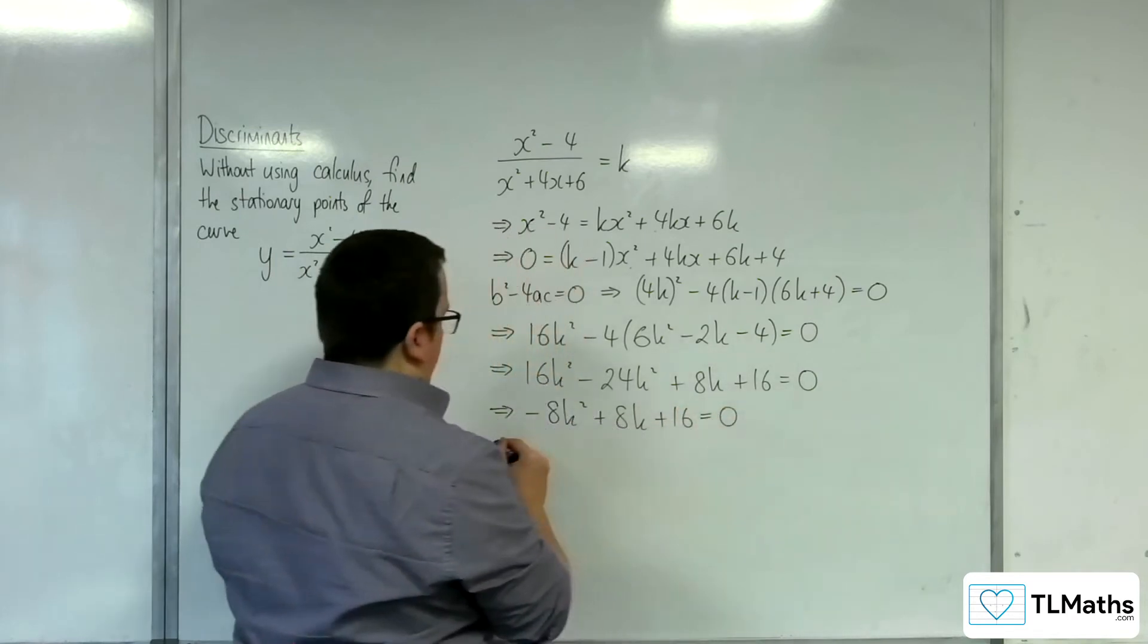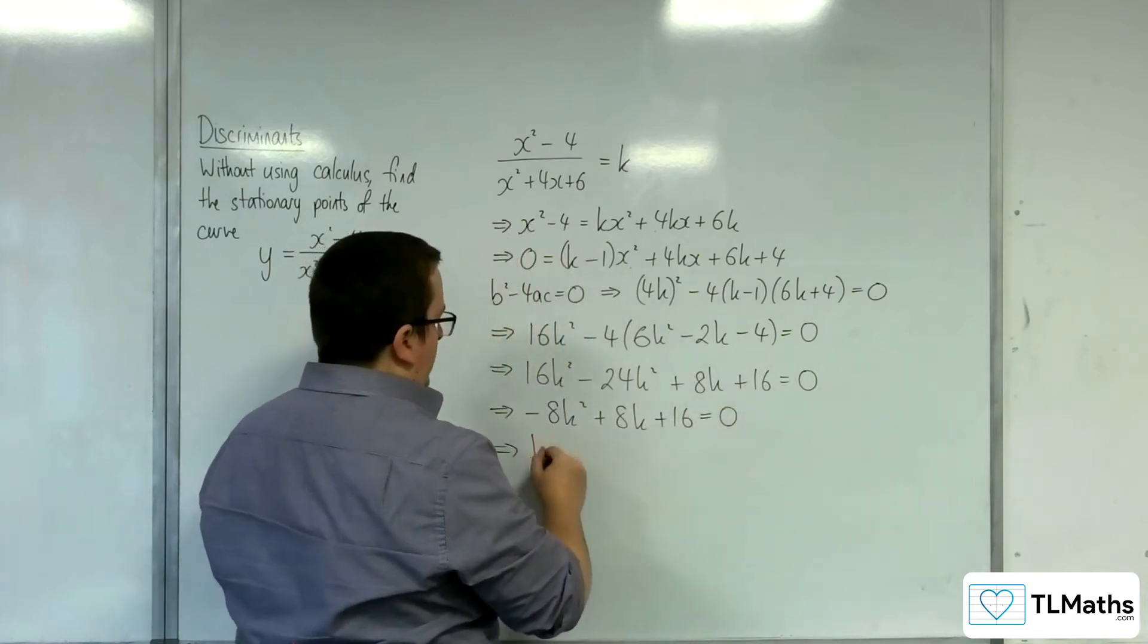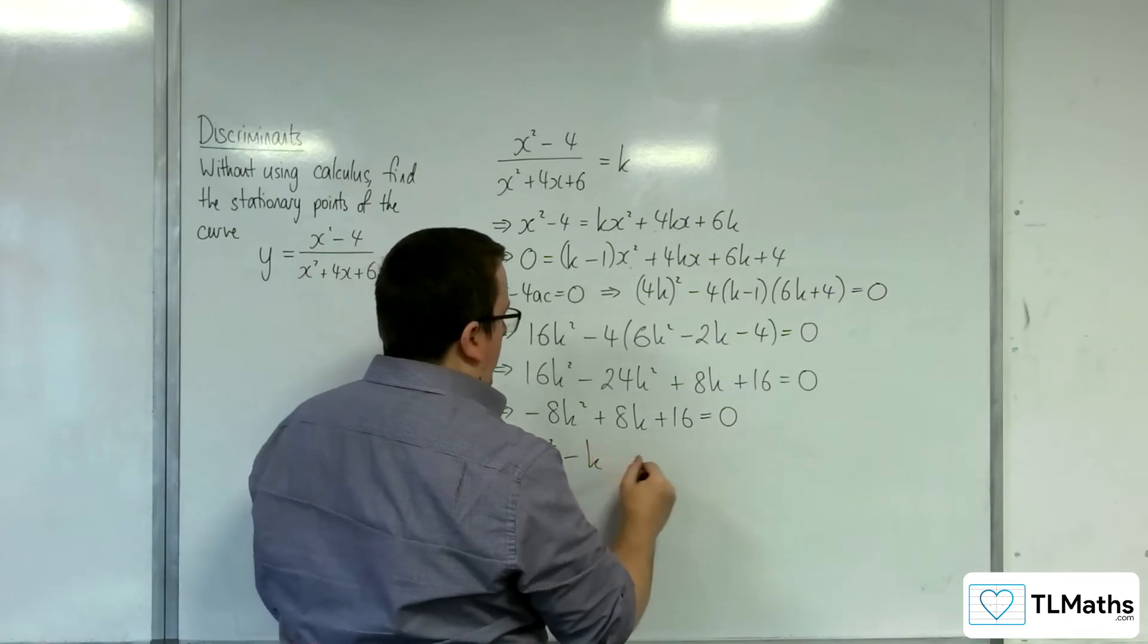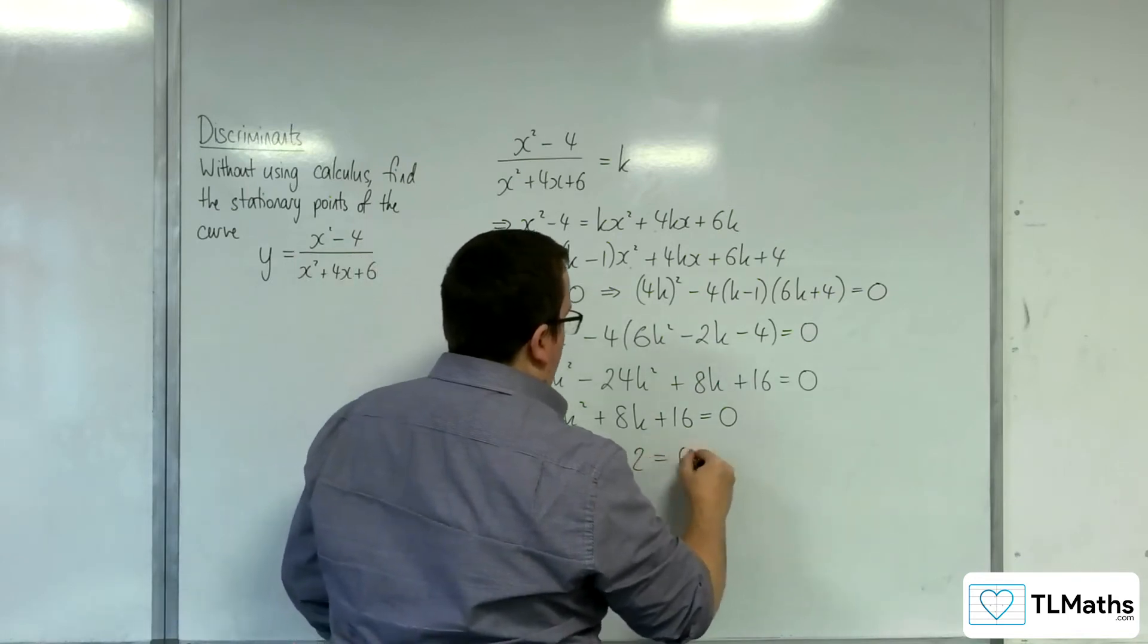Like that. If I divide through by minus 8, I get k squared, take away 2 equals 0.